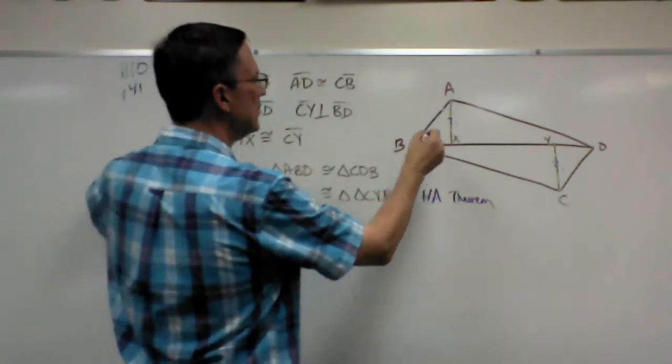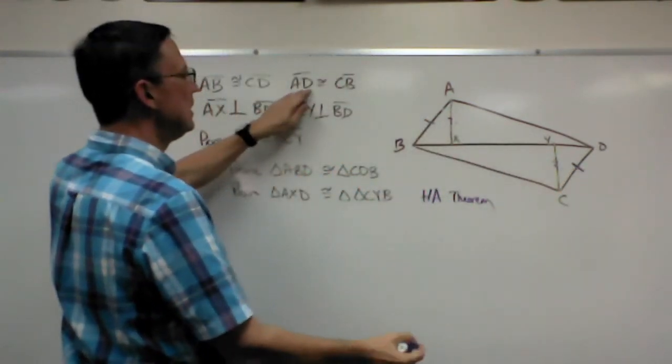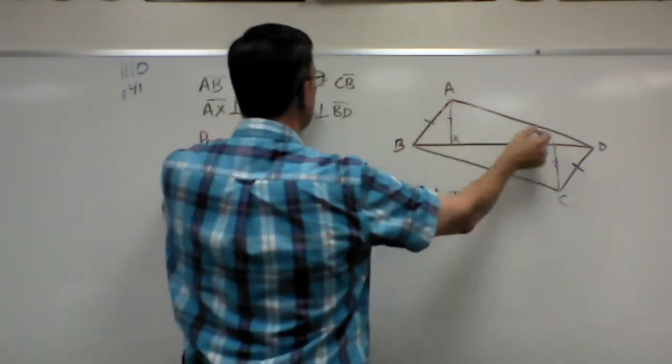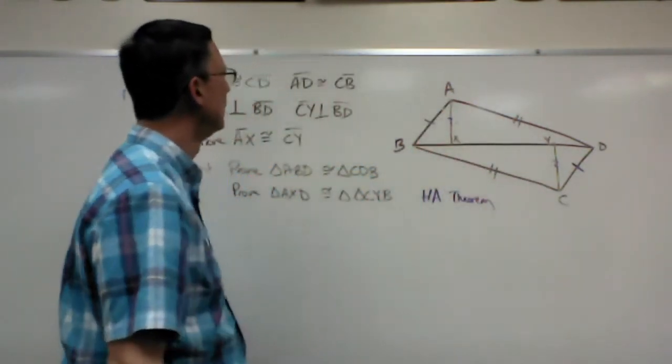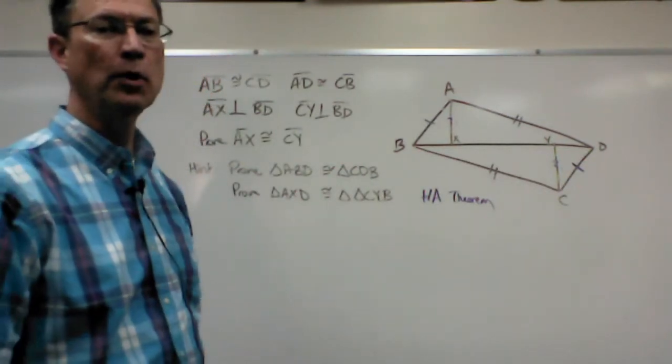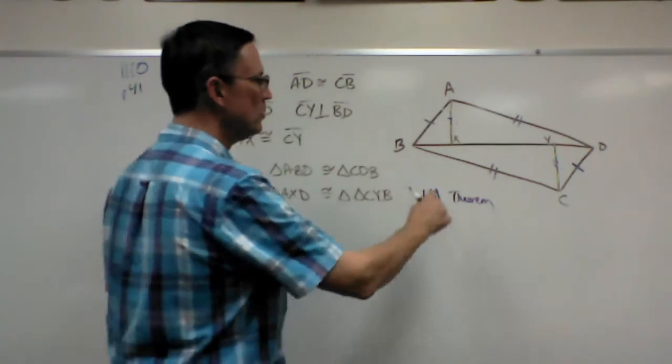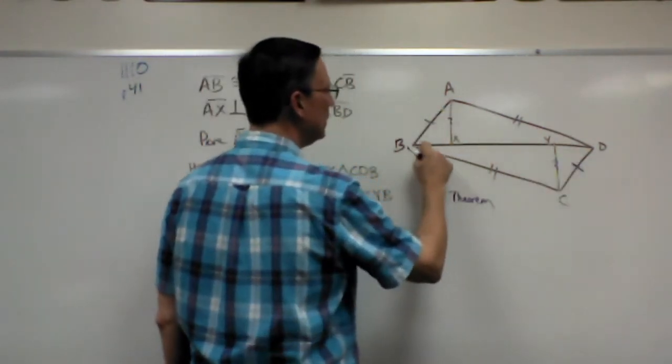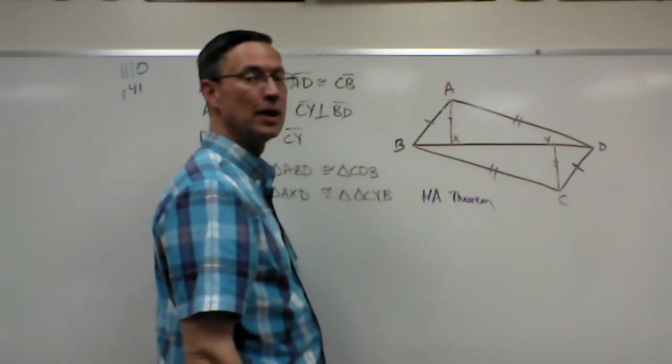Let's see what they give us. AB is congruent to CD. I'm going to mark it on here. AD is congruent to CB. So I'll do two marks there. I think we only need one more step and we can prove these two triangles are congruent. Do you see that this triangle here and this triangle here share a side in common?